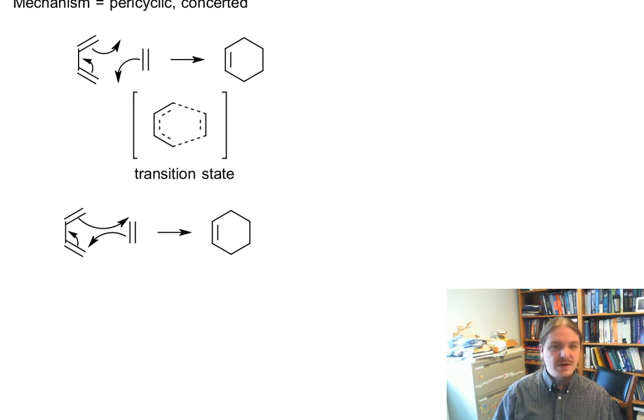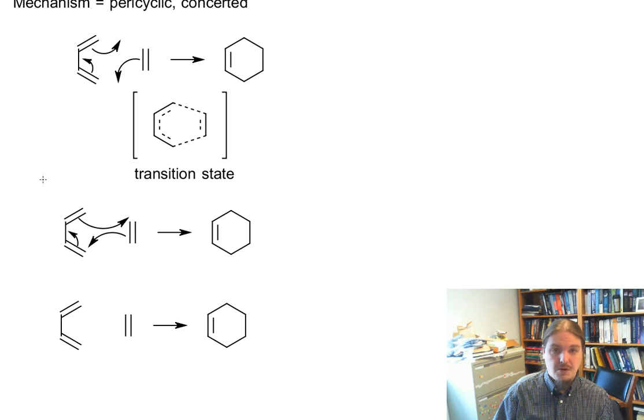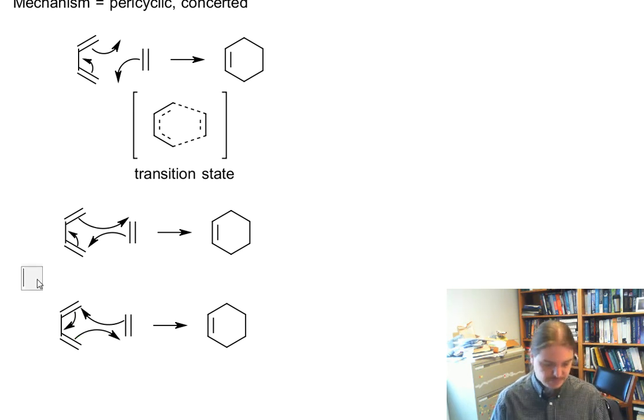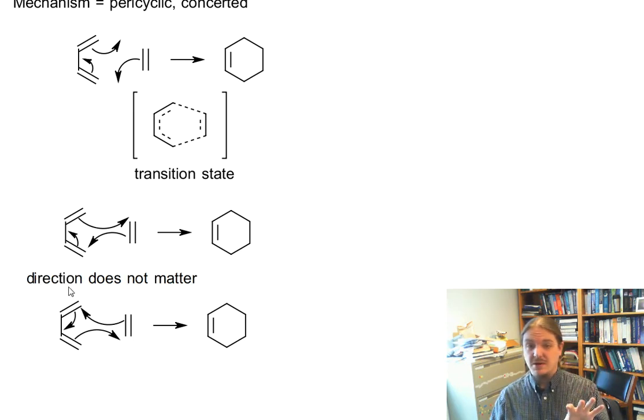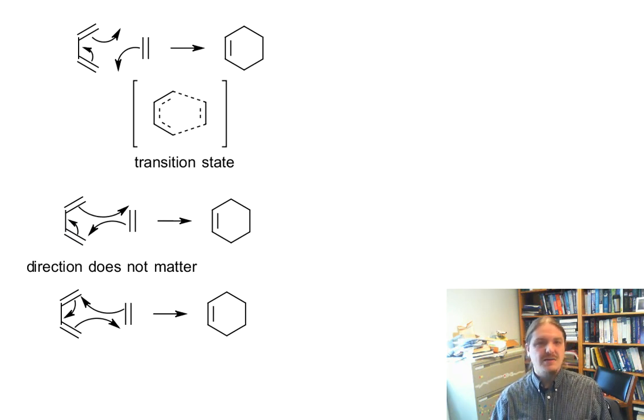Now, you might have come to the question of, well, why are you drawing your arrows counterclockwise? Why didn't you draw your arrows clockwise? That's a really good question. It turns out that the clockwise mechanism is also perfectly legitimate. The direction of these arrows does not matter whether they are clockwise or counterclockwise. It does matter, however, where they start and end. You have to start all of your arrows at existing pi bonds.